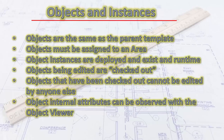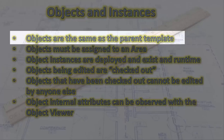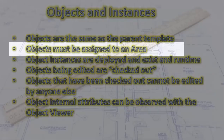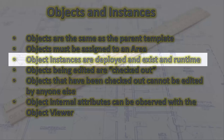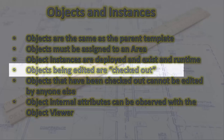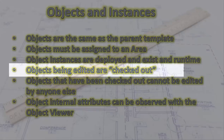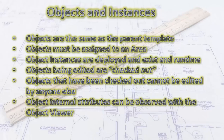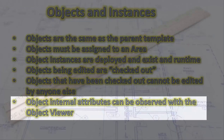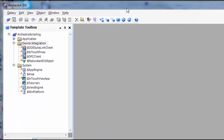Objects are the same as the parent template they're created from. Objects must be assigned to an area to be deployed and run. Object instances are deployed and exist only at runtime. Objects being edited are checked out, and a checked-out object can't be edited by anyone else — it must be checked in before others can edit it. Object internal attributes can be observed with the Object Viewer.